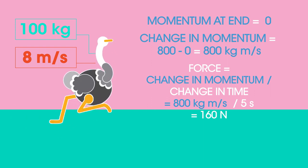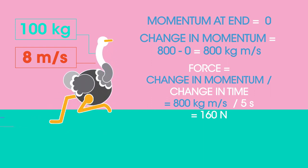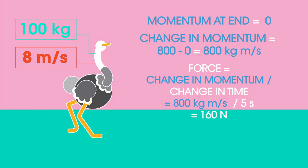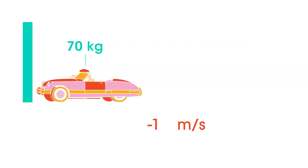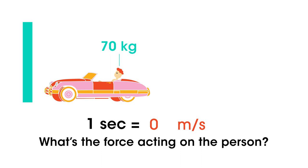That's a lot of force. Imagine a person with a mass of 70 kilograms is traveling in a car at 15 meters per second. The car comes to a complete stop in 1 second. What's the force acting on the person? Pause the video while you work it out.